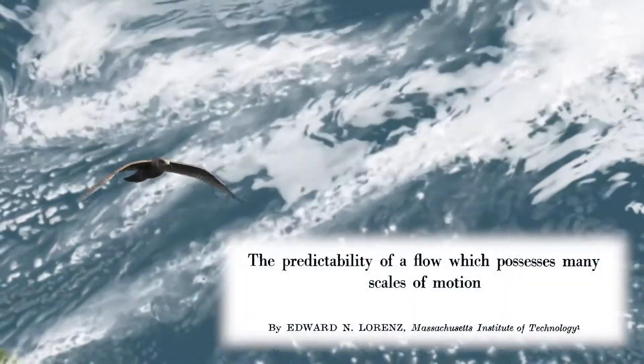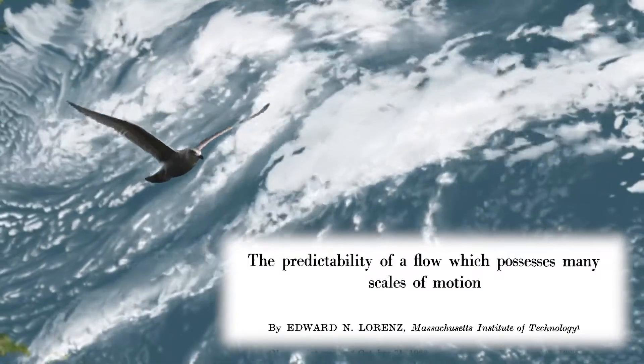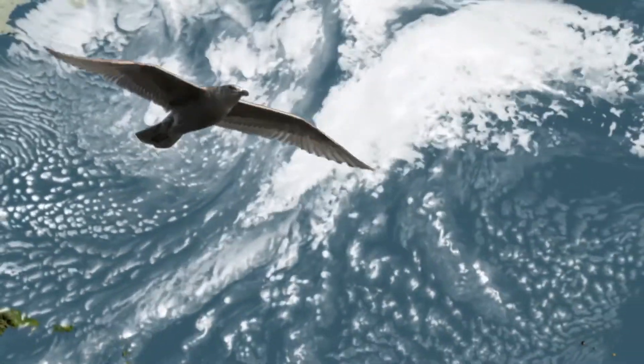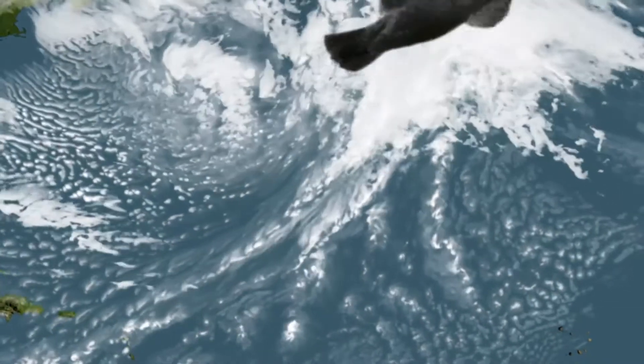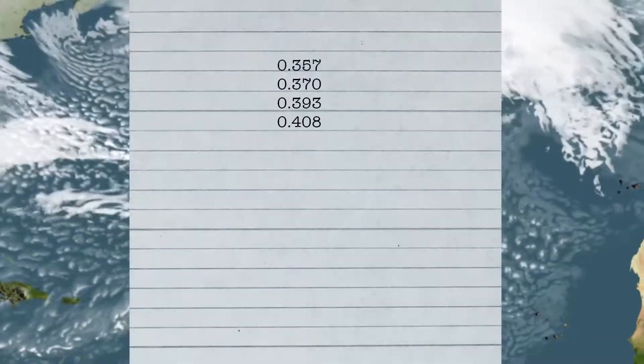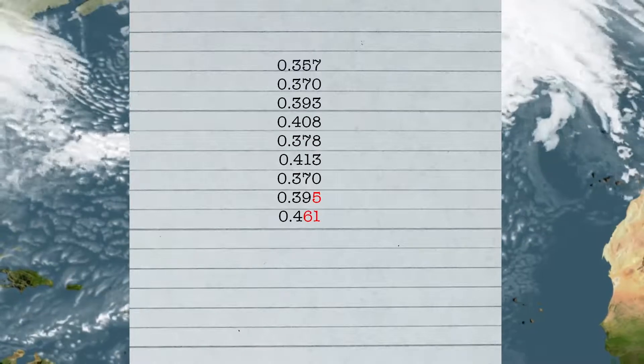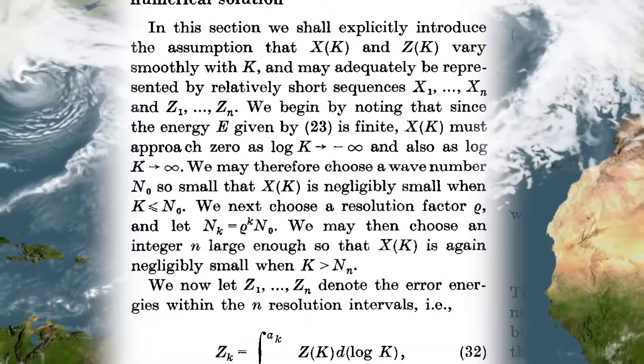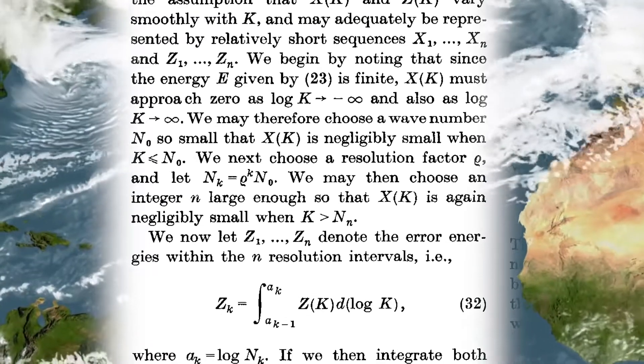In work published in 1969, Lorenz returned to the question of the seagull's wing by taking a closer look at how tiny motions in the air scale up over time to affect huge systems and how errors in small-scale measurements evolve into large-scale errors in prediction. He proposed a mathematical model of how this might work and found something surprising.